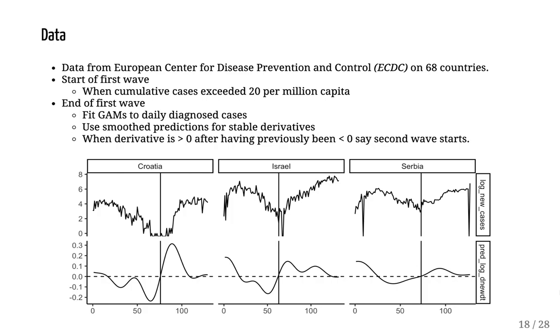To perform this in as empirical a way as we could, we fit generalized additive models to daily diagnosed cases, and then we used the smooth predictions to calculate daily differences. When new cases are decreasing, the derivative is below zero, and then when a second wave starts, the derivative would go above zero. So as a cut point, to say that the second wave is starting and we want to stop modeling a country, we say that it's the point when the derivative becomes positive after having been negative.